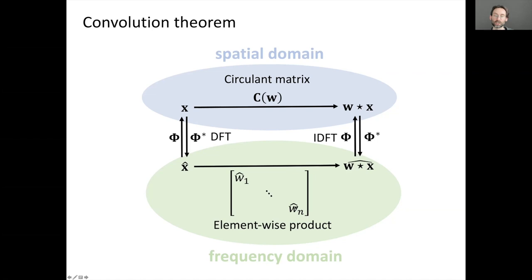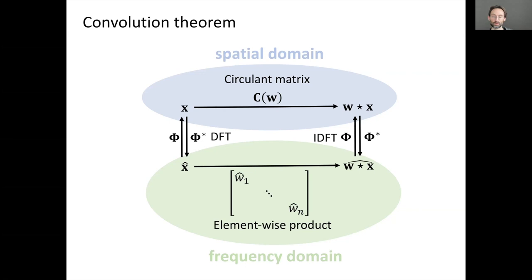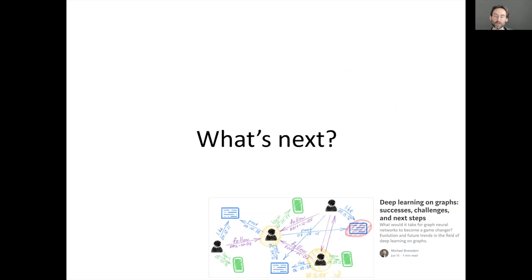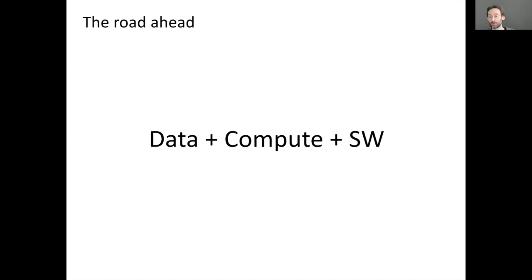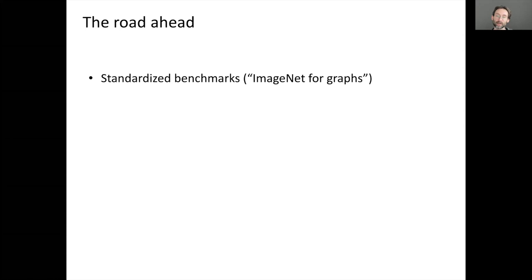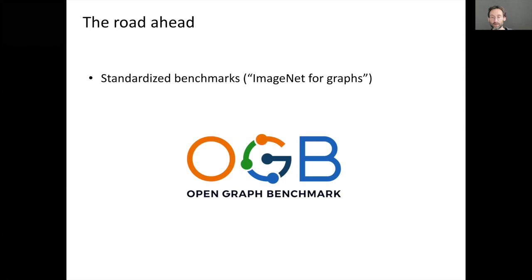The adjacency matrix of the ring graph is the shift operator, and this analogy of the Fourier transform was exploited in early works on convolutional networks on graphs, performing filtering in the spectral domain. Looking ahead, one thing that drove the deep learning revolution was the combination of data, computing power, and software. We don't have anything similar for graphs yet — until recently, nothing comparable to ImageNet. Now there is the Open Graph Benchmark, introduced last year, with multiple datasets and problems.